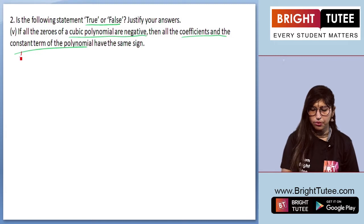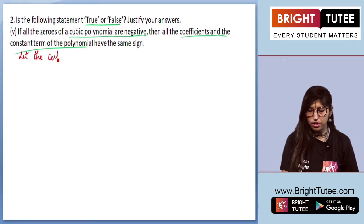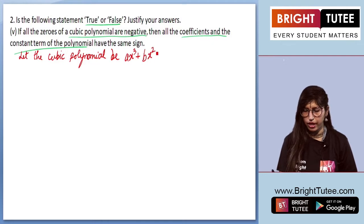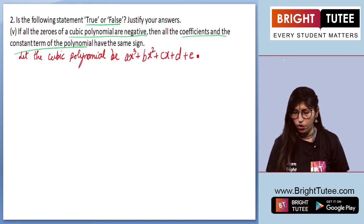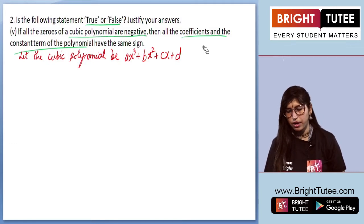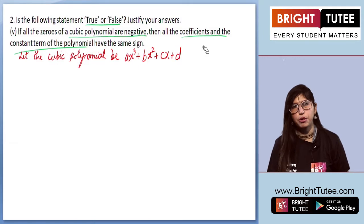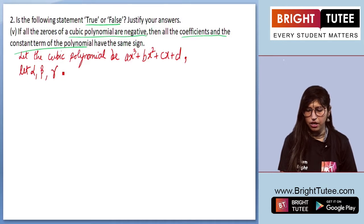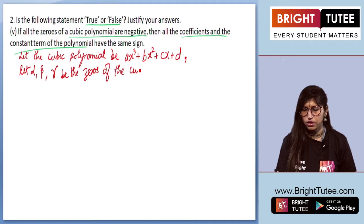Let the cubic polynomial be ax³ plus bx² plus cx plus d. Let alpha, beta and gamma be the zeros of this cubic polynomial.